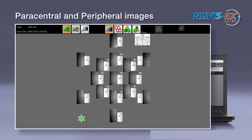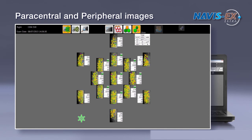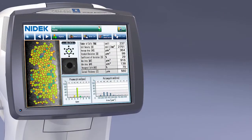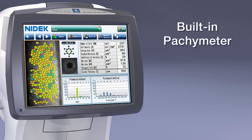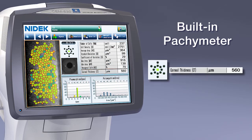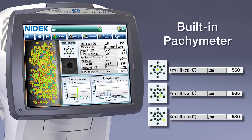Images and analysis of the paracentral and peripheral areas can be displayed in the CEM viewer, providing a comprehensive overview of endothelial cell health. The CEM530 provides a built-in pachimeter, which measures corneal thickness at each of the central, paracentral, and peripheral points.